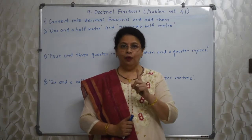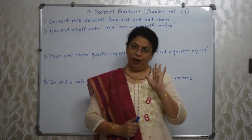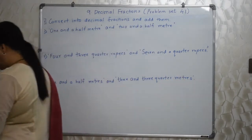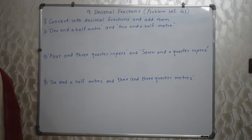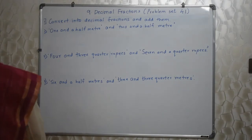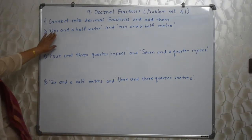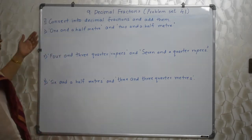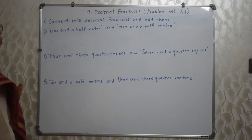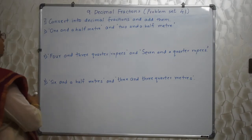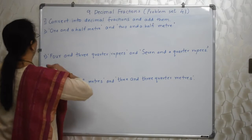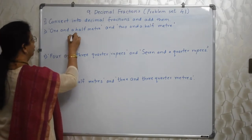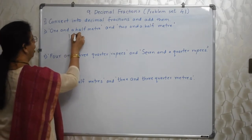See students, pahila question meinne board pe likha hai. What is the instruction? Convert the following into decimal fractions and add them. One and a half meter — one and a half kaise likhna hai? Woh hum loko ne problem set 40 mein dekha hai. To abhi humei pata hai kaise likhna hai. One and a half — half is 50.